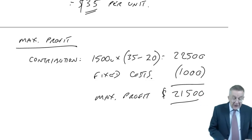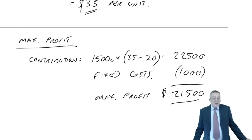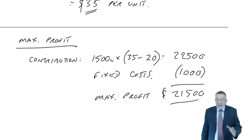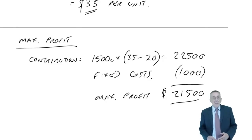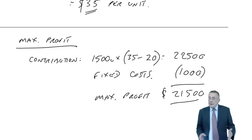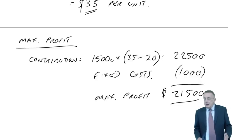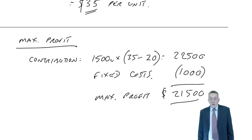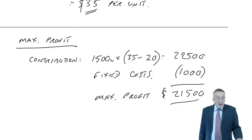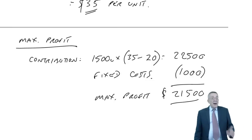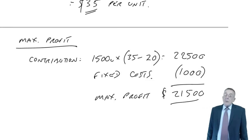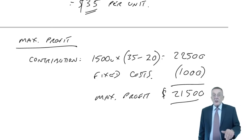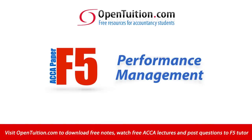There is an Example 6 which I'm not going to do on screen because it's almost the same with just different numbers. It's important to practice, so please have a go at Example 6 and check the answer at the back. If you're wrong and it's not obvious why, re-watch this lecture or ask the tutor. I'll conclude this lecture with one final one on pricing - a short discussion about what we call pricing strategies.